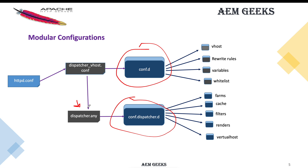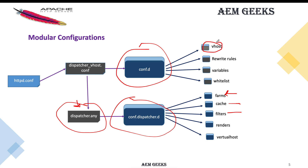The dispatcher.any can contain multiple farm files for multiple websites. Each farm's sections and configurations will be kept in separate files. Cache goes in one folder, filters in another, and so on — you can create your own folders as needed. For virtual hosts, we'll keep rules, variables, and rewrites organized. For each website, we will have a separate configuration rather than mixing multiple website configurations in the same file.